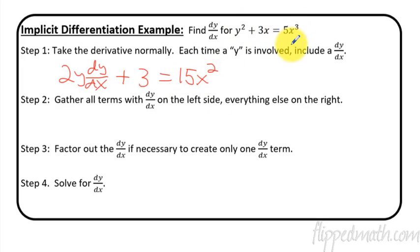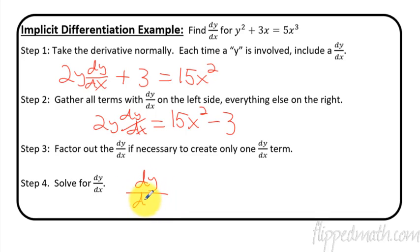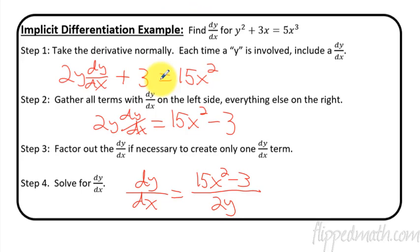We're going to take the derivative using power rule, and any time you see a y, you're also going to tag on a dy/dx right next to it. Step number 2: gather all the terms that have a dy/dx on one side and everything else on the other side. So that leaves us with 2y dy/dx equals 15x squared minus 3. We subtract 3 from both sides. Factor out the dy/dx if necessary to create only one dy/dx term — we'll see that in future examples. Then we get dy/dx by itself. We divide both sides by 2y, and we end up with dy/dx equals 15x squared minus 3 over 2y. If you can factor anything out and cancel, you would do that. But that is now the derivative.